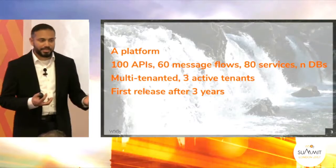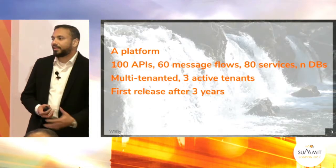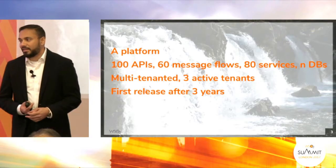The first problem is one of our experiences from some time back. We worked on a digital platform with 100 APIs, 60 message flows, around 80 services, and n number of databases. This was architected to use multi-tenancy with three active tenants when it went into production. But the problem is it went into production after three years from design to implementation. When it went into production, the requirements had changed and the value that platform would have provided was no longer there. That is the first problem — they followed a waterfall-type method to implement and plan the project.